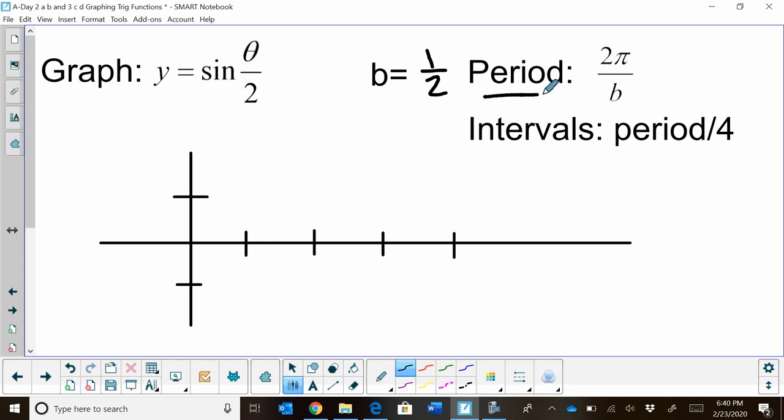Now to find the new period, what we're going to do is take the period of sine, which is 2 pi, and we're going to divide it by b. So I'm going to take 2 pi divided by one-half. Well, 2 pi divided by one-half ends up being 2 pi times 2, which ends up being 4 pi. So that's my full period now. So I'm going to do one full cycle in 4 pi.